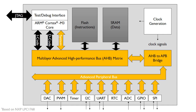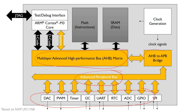The system bus is also used to connect up the peripherals. We've got external peripherals, and they're all on this advanced peripheral bus, which is connected to the bus matrix using the AHB-to-APB bridge. So if the core is interfacing with these peripherals, it does so over the system bus.